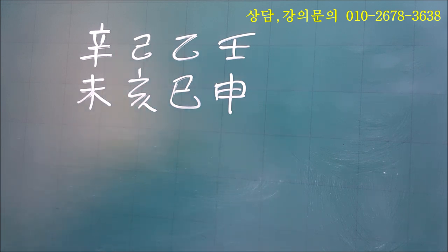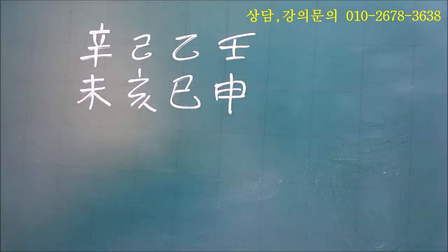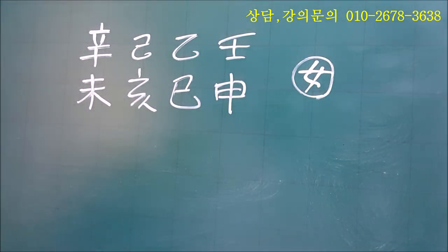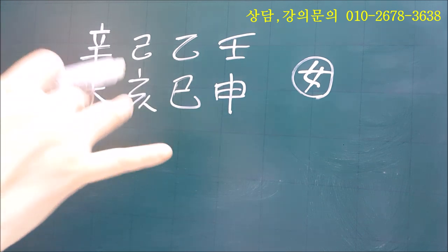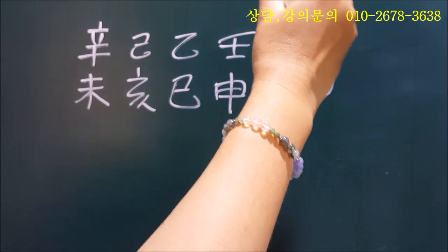지금 칠판에 임신년 을사월 기예일 신미시에 태어난 여성분의 명조를 보여드리고 있는데요. 한자를 모르시는 분은 제가 읽었을 때 그냥 따라오시면 됩니다. 이 분은 젊은 분이세요. 5월 5일 양력 기준으로 해서 저희가 입하라고 하는 여름이 시작이 돼요. 거기서부터 약 17일 뒤에 태어나신 분이세요.